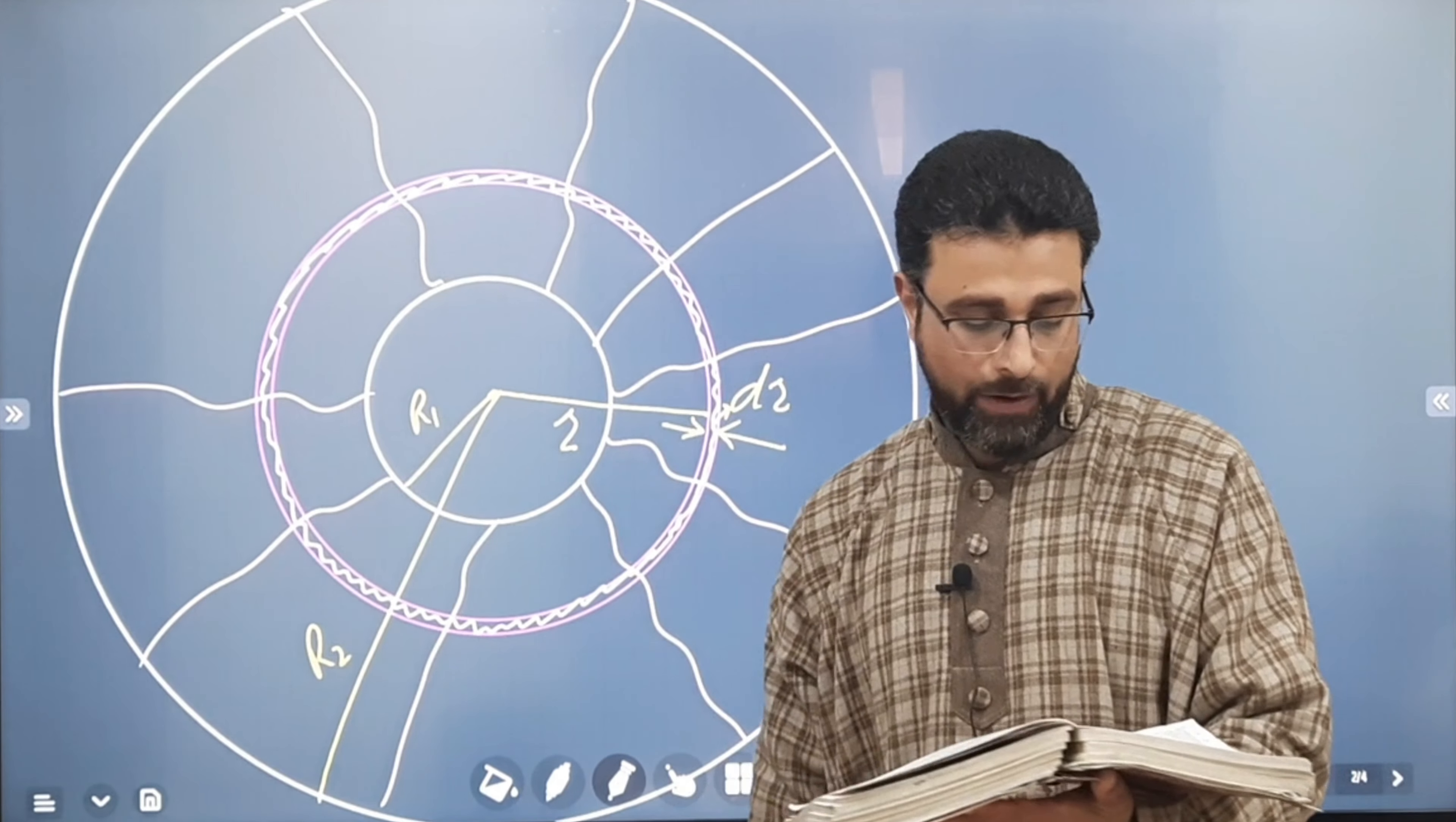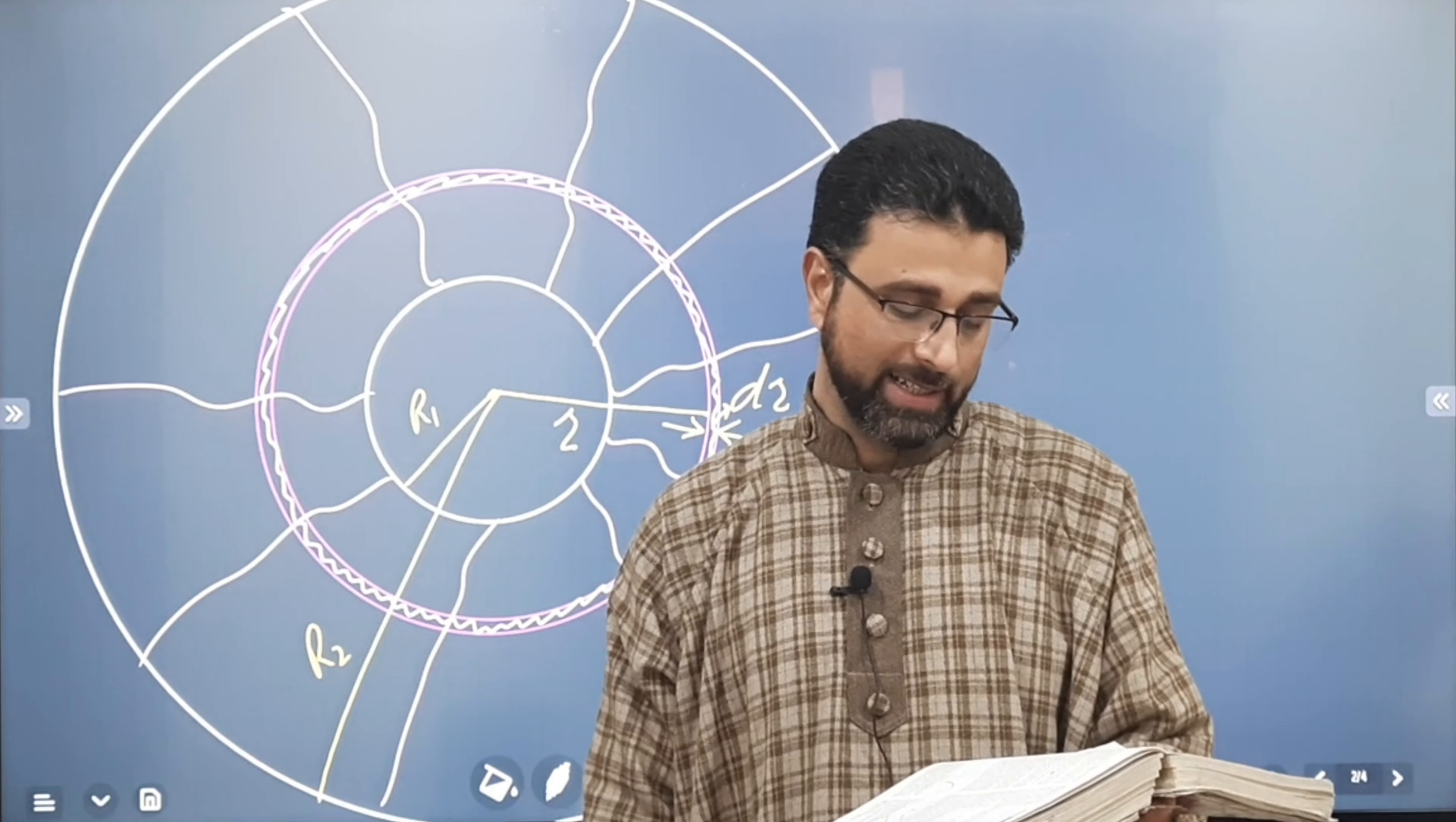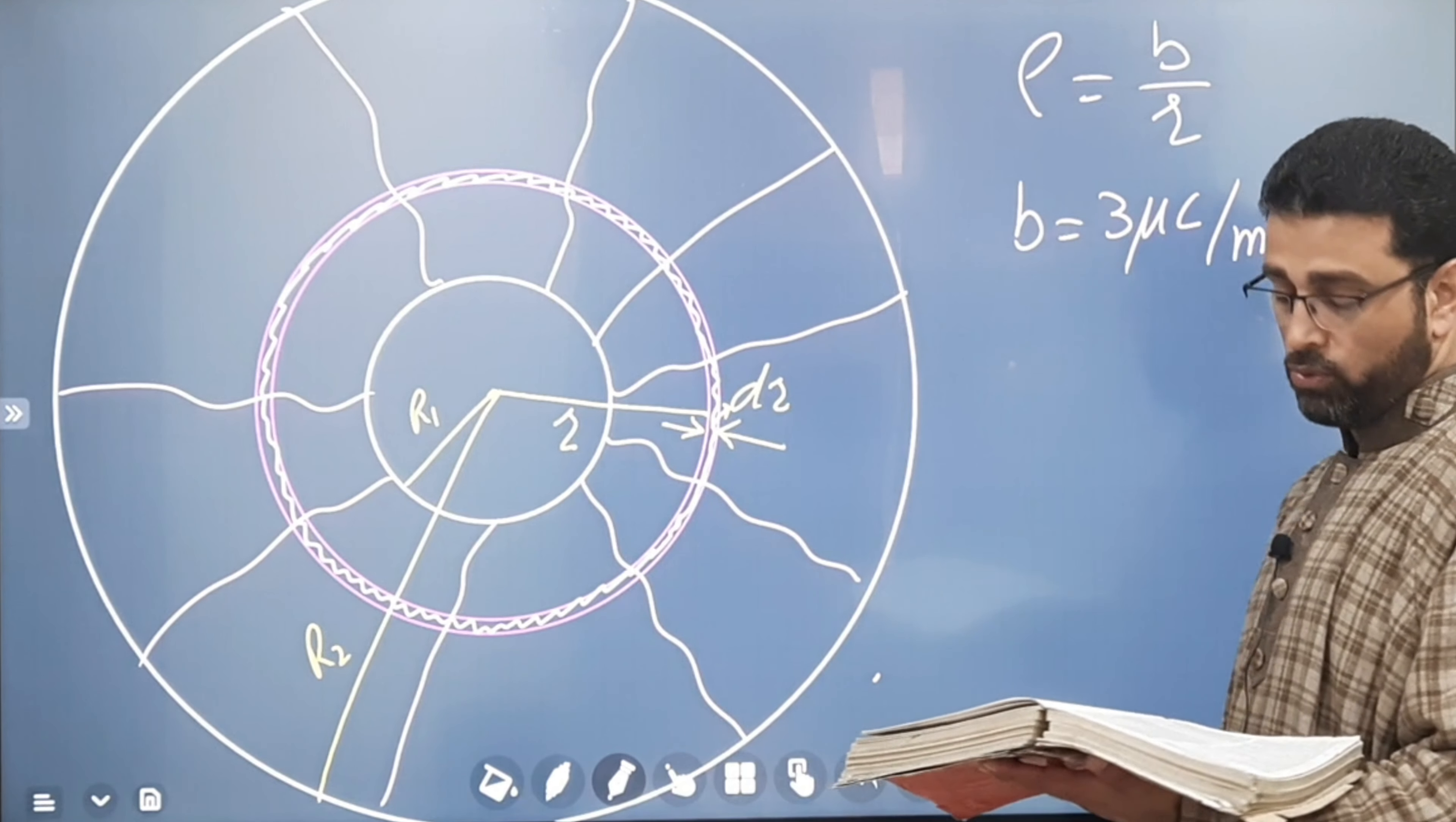We are given a non-conducting spherical shell with an inner radius of 4 cm and an outer radius of 6 cm has charge spread uniformly through its volume between its inner and outer surfaces. The volume charge density rho is the charge per unit volume with the unit Coulomb per cubic meter. It is already in SI system. For this shell, rho is equal to B divided by R, where R is distance in meters from the center of the shell. B is equal to 3 microcoulomb per square meter.